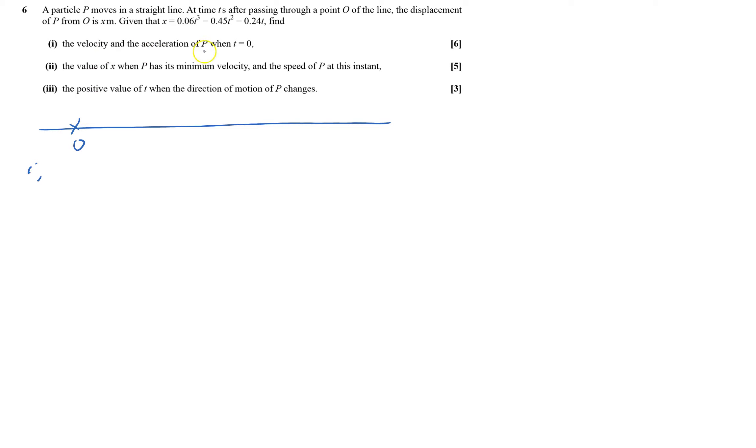First part, I'll find the velocity and acceleration of P. I've got x equals 0.06t cubed minus 0.45t squared minus 0.24t.